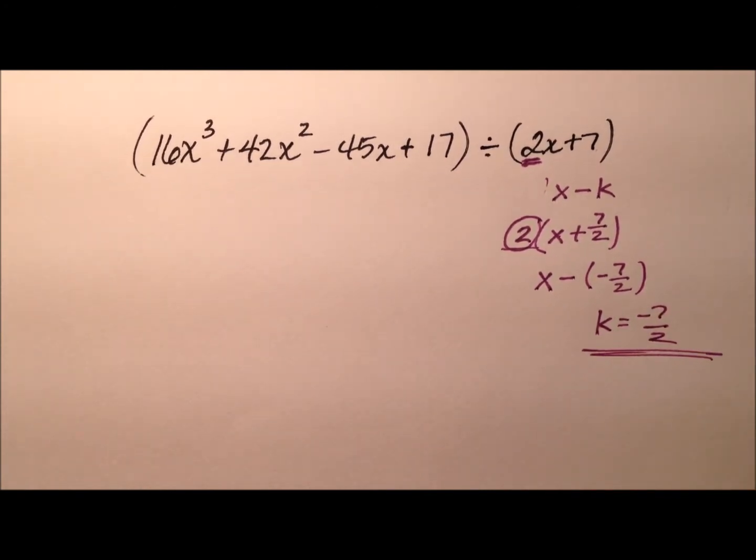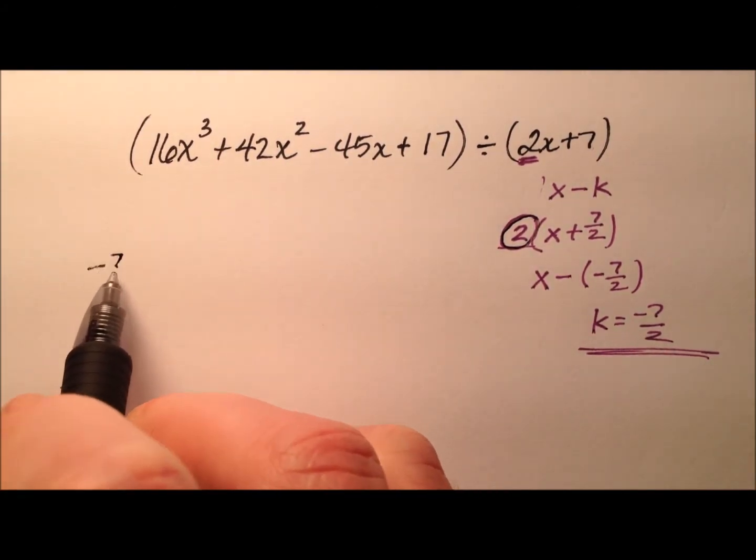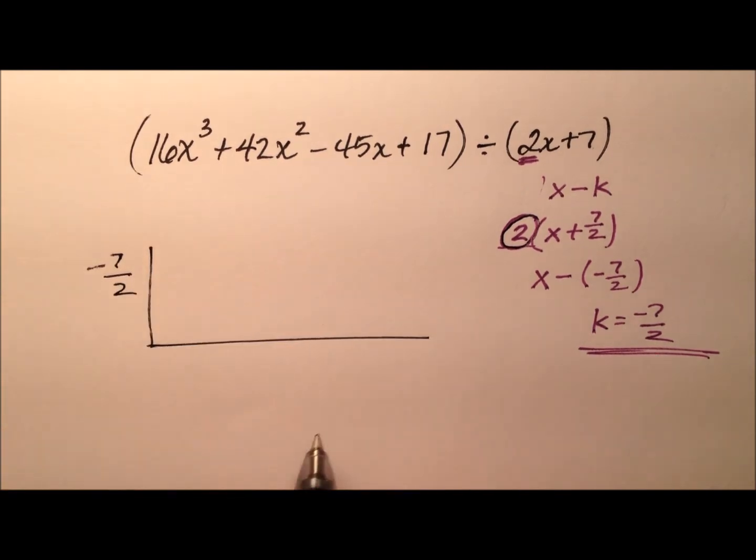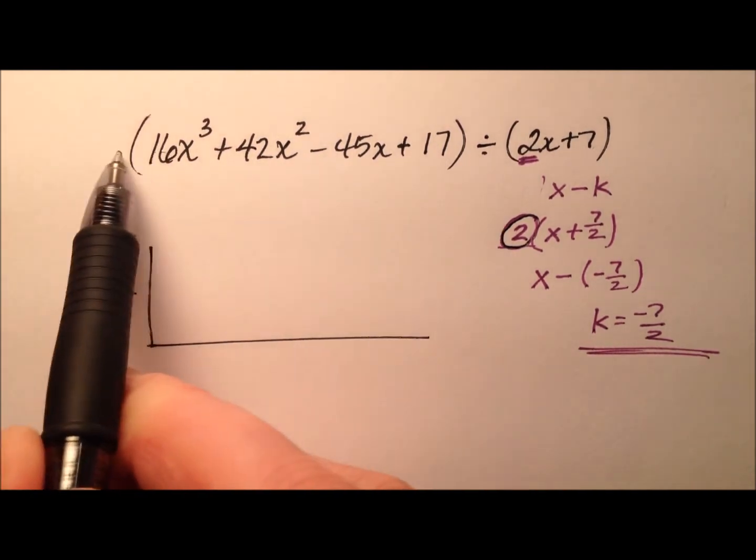Okay, so let's go ahead and set up my synthetic division algorithm. And once again, yes, we'll come back to this 2 at the end. So we have negative 7 halves. Okay, and let's put our coefficients in their place.